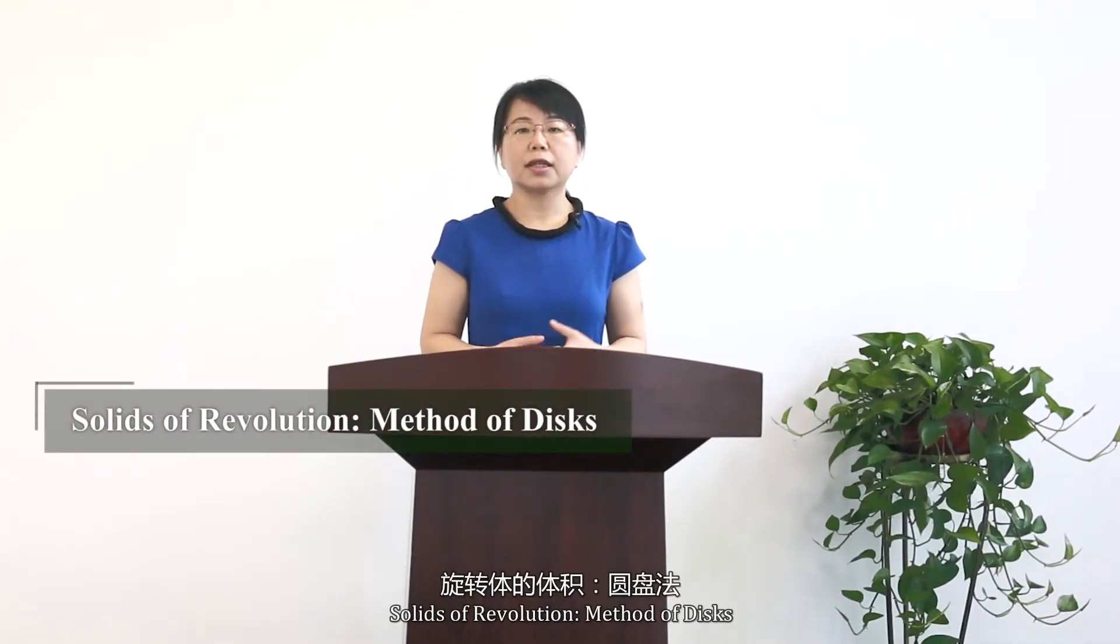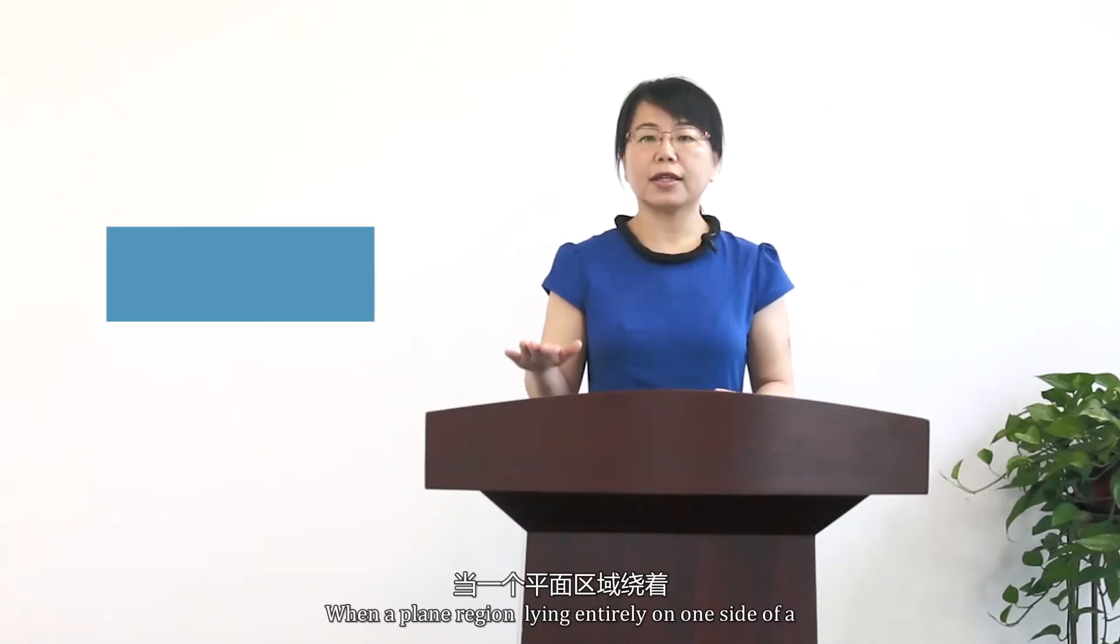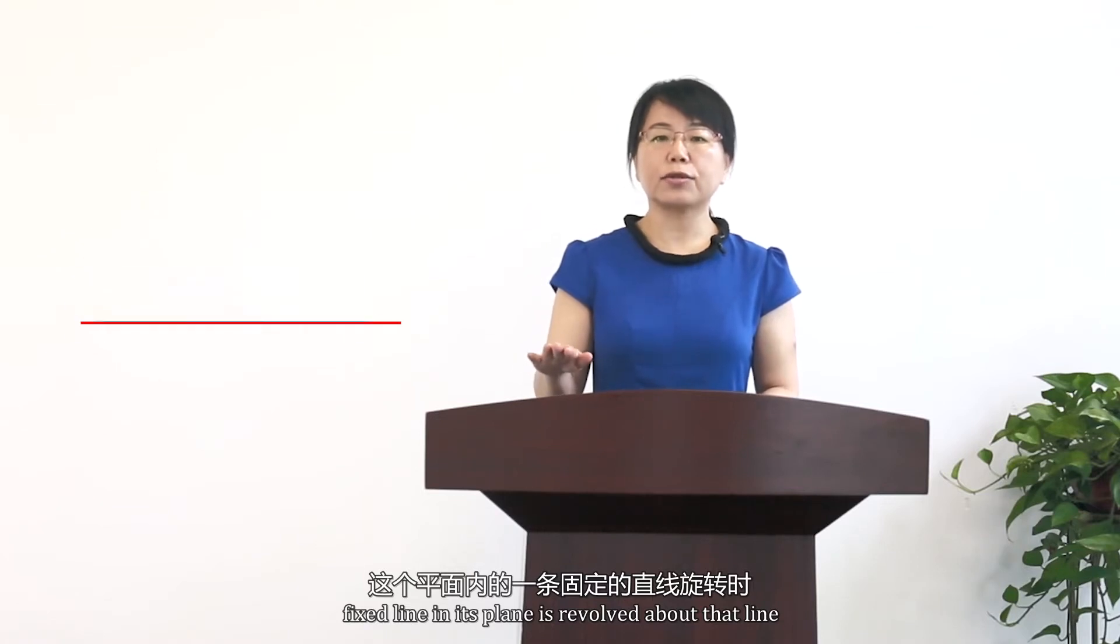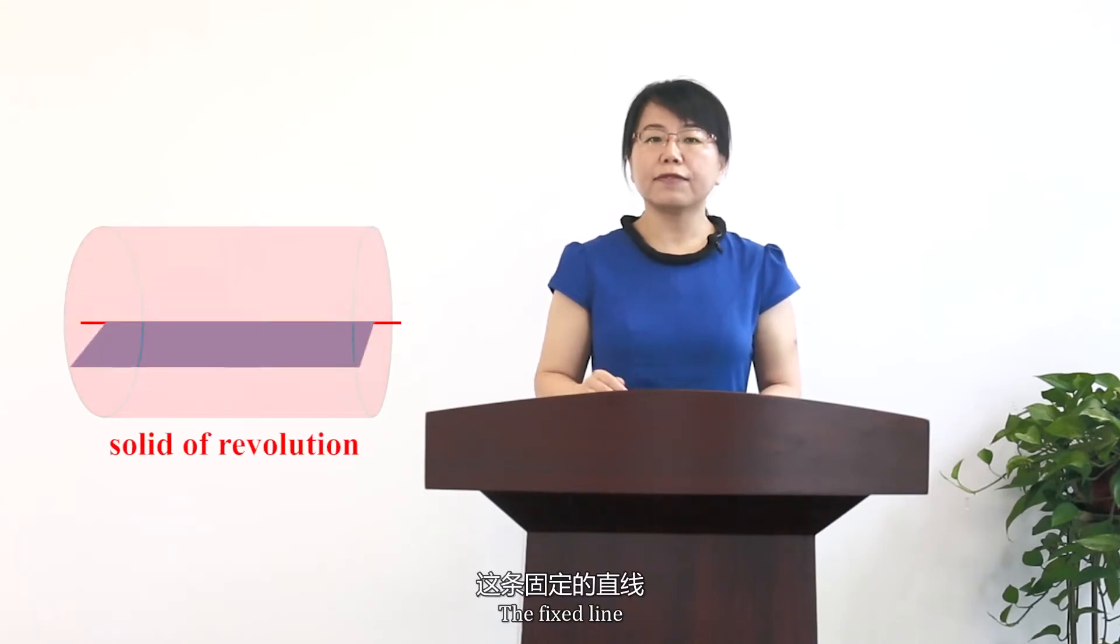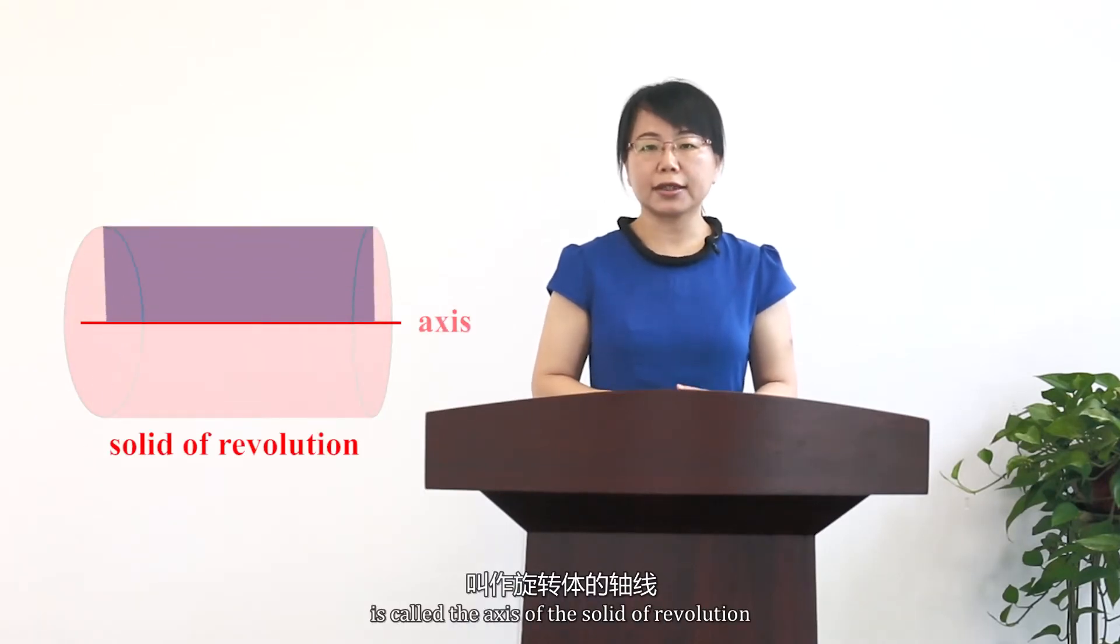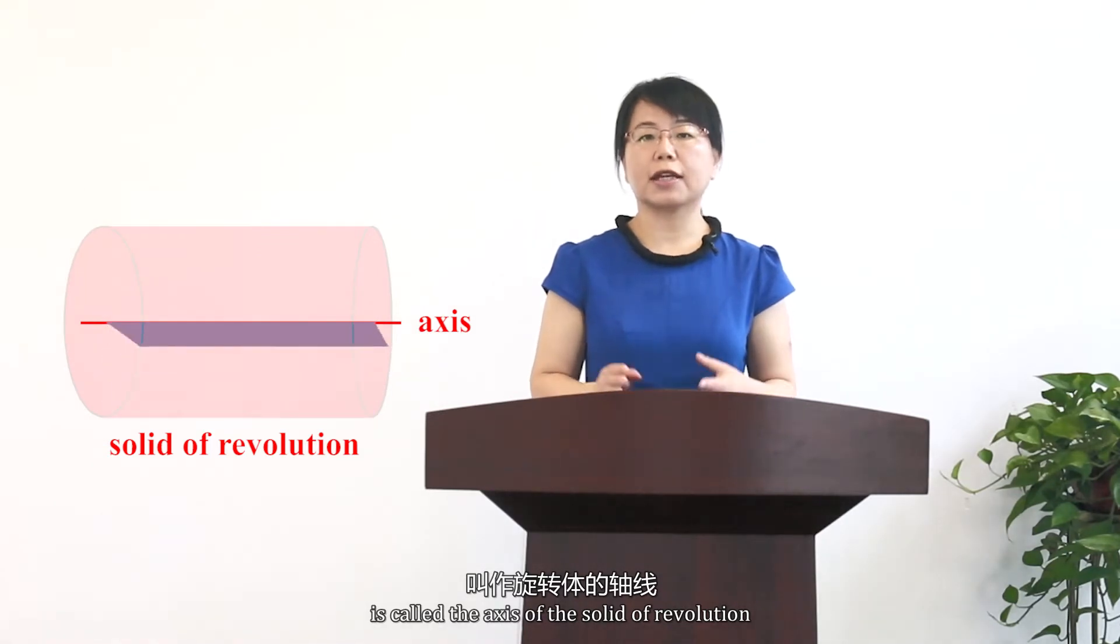Today we are going to discuss solids of revolution. The first type of method is the method of disk. When a plane region lying entirely on one side of a fixed line in its plane is revolved about that line, then it generates a solid of revolution. The fixed line is called the axis of the solid of revolution.